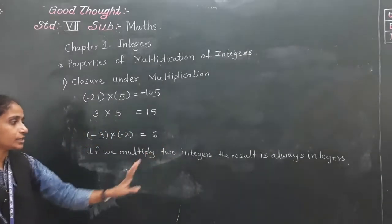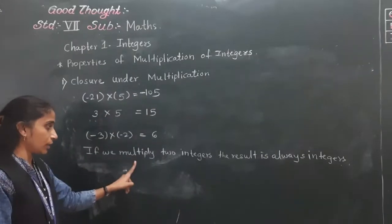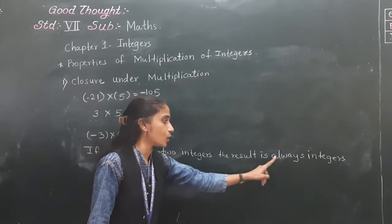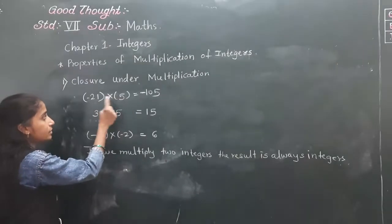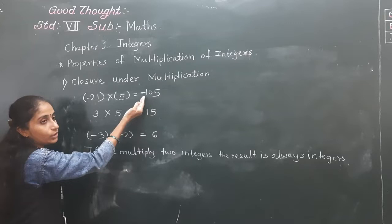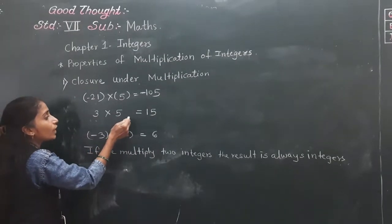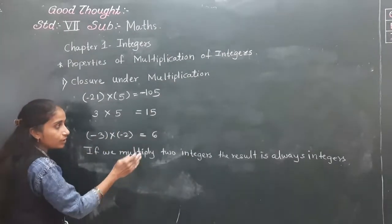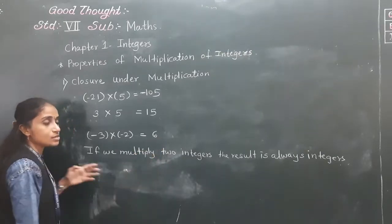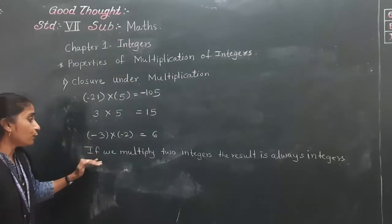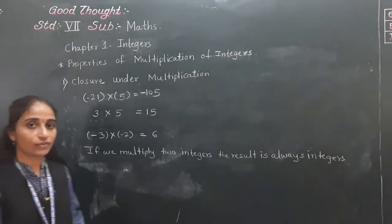If we multiply 2 integers, the result is always an integer. See here — minus 21 and 5, answer is minus 105, which is an integer. 3 into 5 is 15, also an integer. Minus 3 into minus 2 equals 6, also an integer. So if we multiply 2 integers, the result is always an integer. Everyone understood this property?